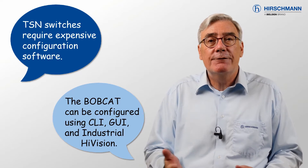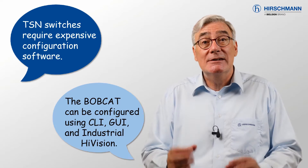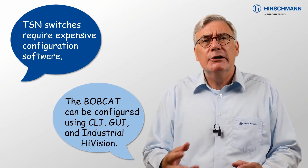TSN can also be configured via the built-in graphical user interface. And to configure TSN on up to 16 Bobcat switches simultaneously, the network administrator can use the free-of-charge version of industrial HiVision. Watch part 2 of this video series to see how it's done.